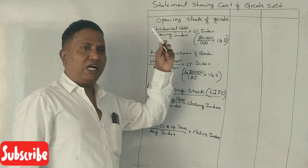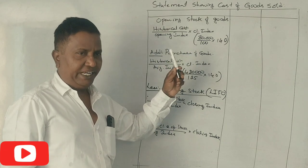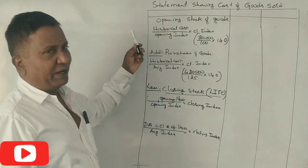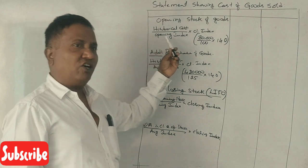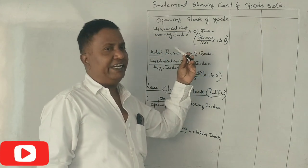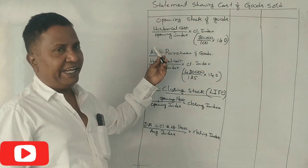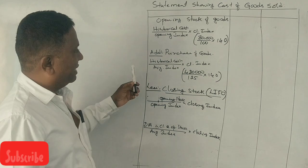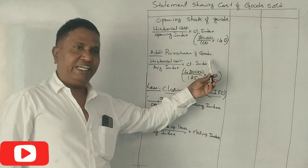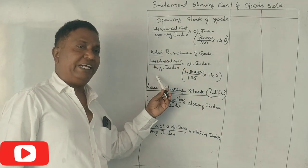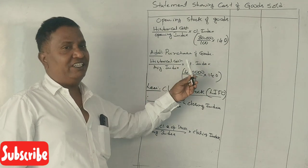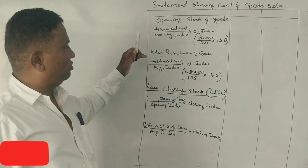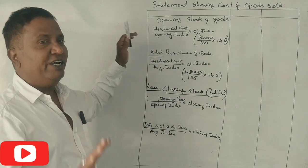For both FIFO and LIFO: opening stock plus purchases. Opening stock is historical cost divided by opening index, multiplied by closing index. Purchases: historical cost divided by average index, multiplied by closing index. That formula is common — same to same for both methods.